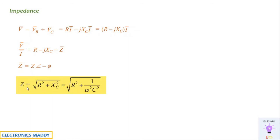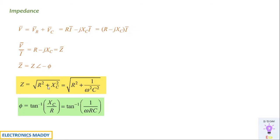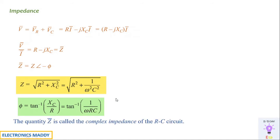We will be finding the magnitude Z and the phase angle phi. Magnitude Z is given as the square root of R squared plus XC squared, based on the Pythagorean theorem. This can also be written as the square root of R squared plus (1 divided by omega C) squared, since XC equals 1 divided by omega C, as derived in our previous video. Phi is given as tan inverse of XC by R, which equals tan inverse of 1 divided by omega RC. The quantity Z bar is called the complex impedance of the RC circuit. Z bar equals R minus j XC, the magnitude and phase are given by these formulas, and these are very important for analyzing any circuit and solving problems.